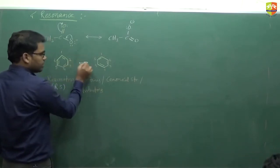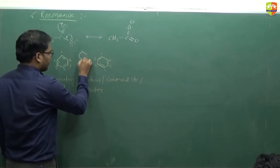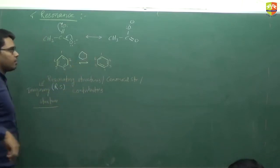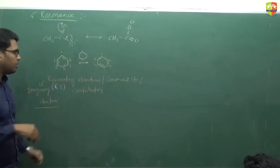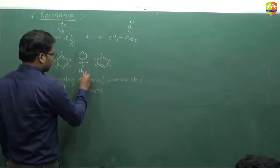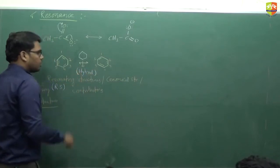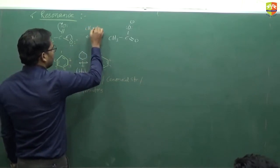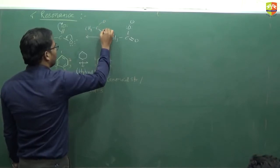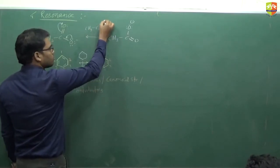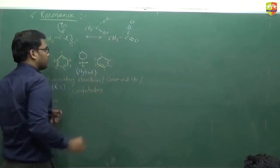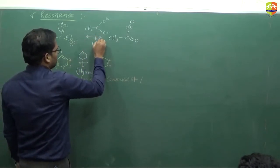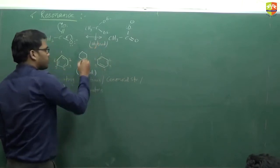The resonance hybrid for benzene is the structure where the pi electrons are delocalized over the entire ring — this is the real structure. For the acetate ion, the resonance hybrid is CH3, C, O, O, where the pi electrons are delocalized from one oxygen to the other, giving delta negative on both oxygens. This is the hybrid or real structure.